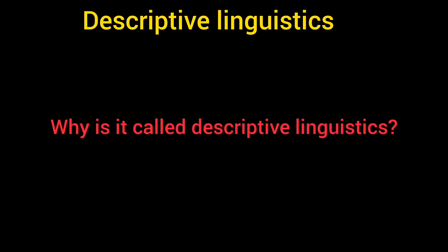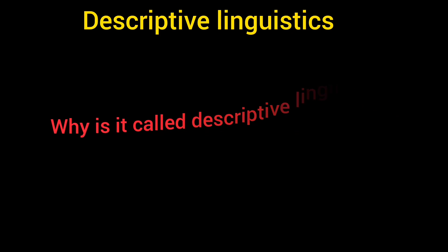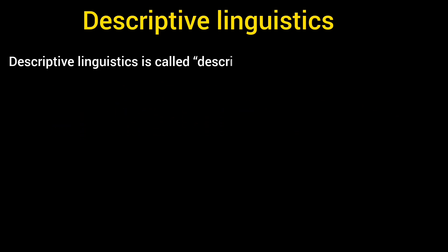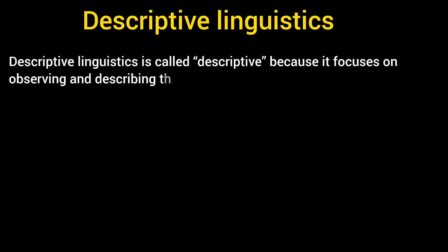There must be a question in your mind: why is it called Descriptive Linguistics? Descriptive Linguistics is called Descriptive because it focuses on observing and describing the actual usage of language. Linguists in this field record, analyze, and explain linguistic phenomena as they occur in natural contexts, without imposing any judgments or prescriptive rules.